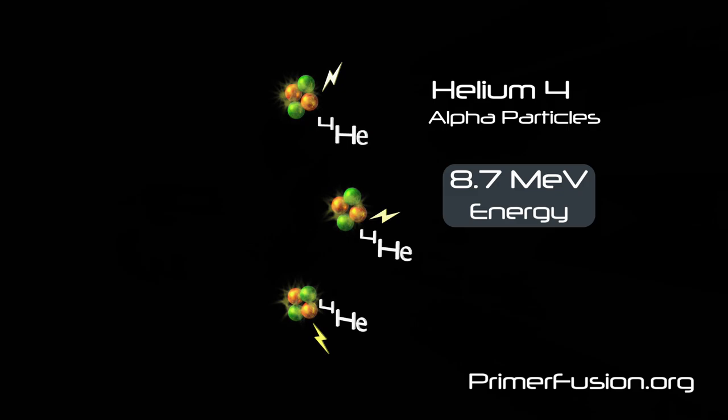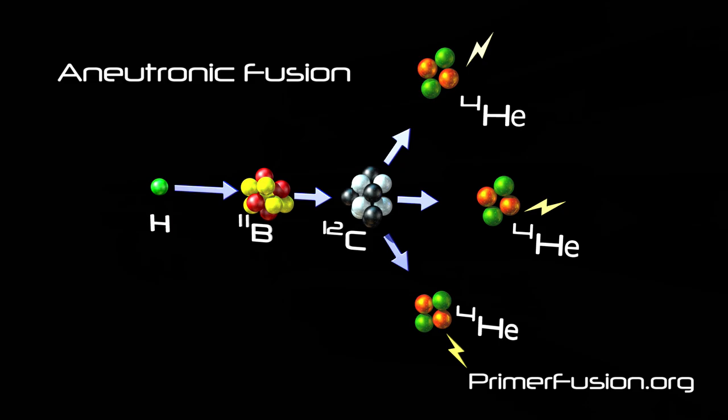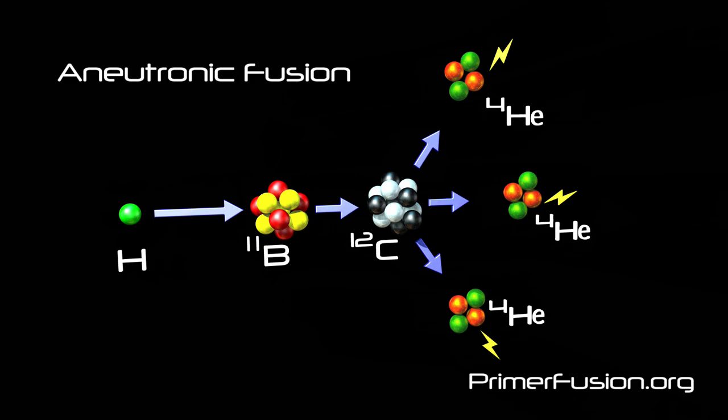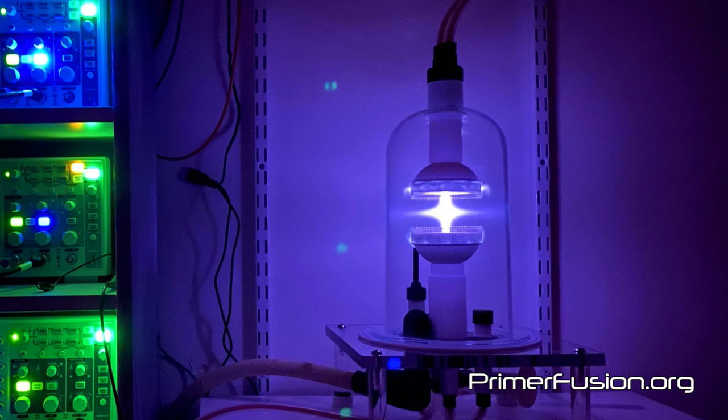These highly charged helium-4-alpha particles then collide with the collector to extract the charges, which are then run through a transformer to directly convert them to usable electricity without going through a heat conversion process such as that used in the typical steam-based power plant.